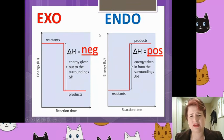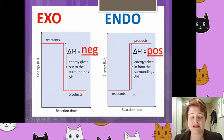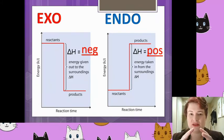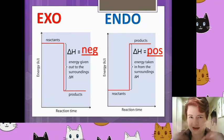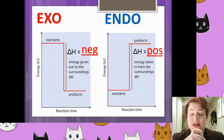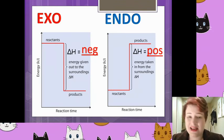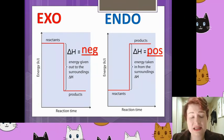The endothermic reaction is going to look like this in an energy level diagram. The reactants start with a relatively low quantity of energy, they absorb energy from the surroundings, so the surroundings get colder and heat is taken in — endo, in. Therefore the reactants have a low energy to begin with and the products have a higher energy. Starts with low energy, ends with high energy, so delta H is always going to be positive.